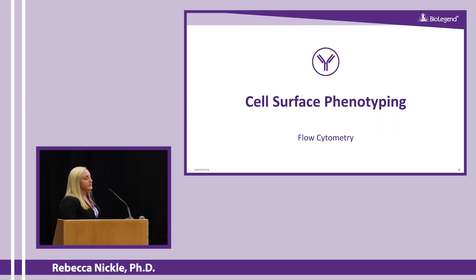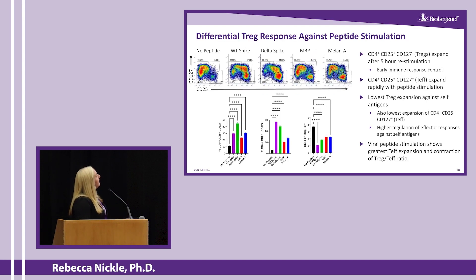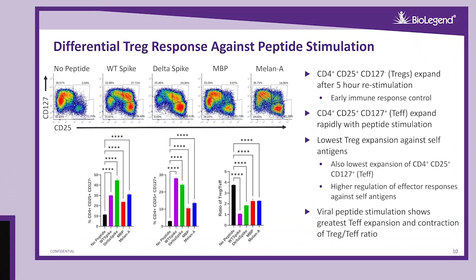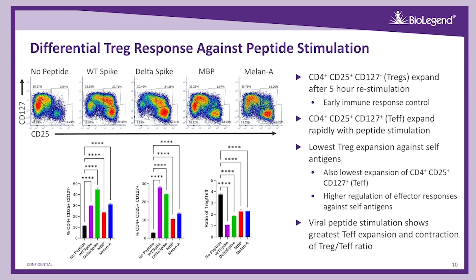Now we'll move on to results, starting with cell surface phenotyping and some correlating LegendPlex data. First we looked at CD4 T cells, examining CD25 expression on the x-axis and CD127 expression on the y-axis. With peptide stimulation we saw a great expansion of CD25-positive cells, including an expansion of the CD25-positive, CD127-negative Treg population — indicative of early immune response control even in a five-hour stimulation — but we also saw an expansion of the CD25-positive, CD127-positive effector T cell population as well.